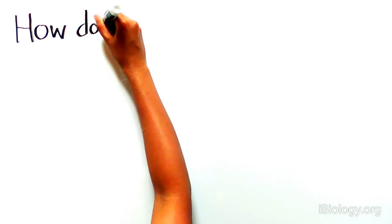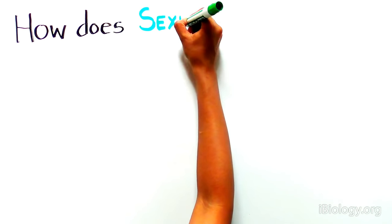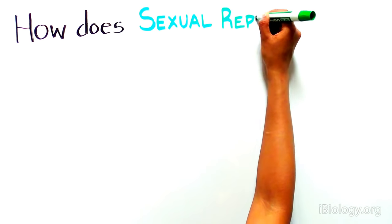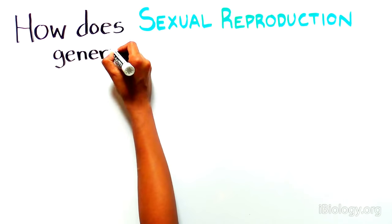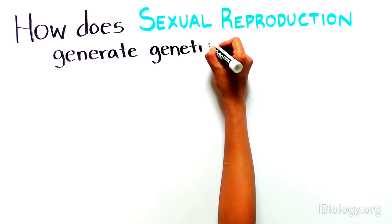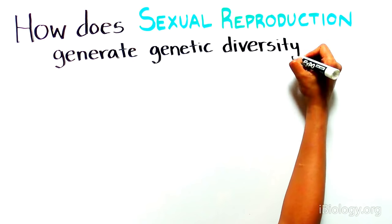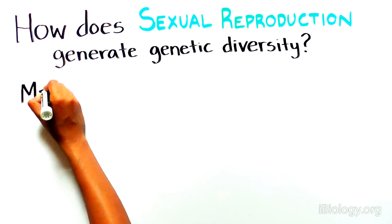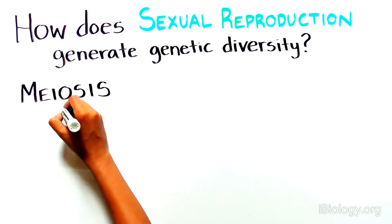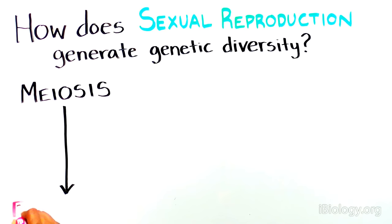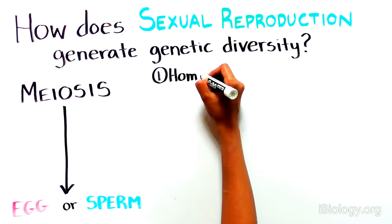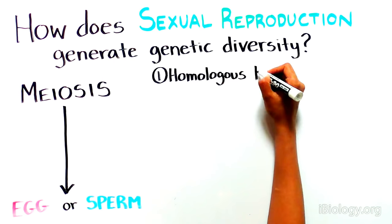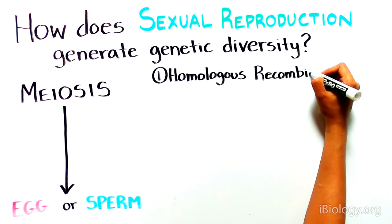We have been talking about genetic diversity, but how does sexual reproduction generate this diversity in the first place? During meiosis, which produces the sperm and the egg needed for sexual reproduction, there are two key steps that produce genetic diversity.